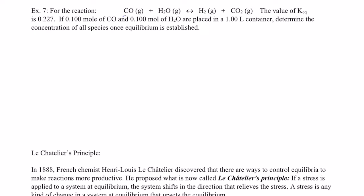We have carbon monoxide gas reacting with water vapor to produce hydrogen gas and carbon dioxide gas. The equilibrium constant is pretty small here, 0.227. So we're going to place 0.1 moles of carbon monoxide in the same amount of moles of water vapor in a rigid one liter container.